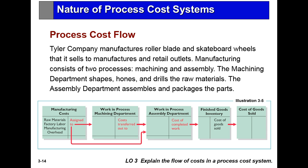So they're just building the wheels. A wheel is not always the same — you can tell the difference between nice roller blade wheels and junky ones. The manufacturing costs come in and get put into the work-in-process department for machining, then go over to the assembly of the wheels, and move on to finished goods.